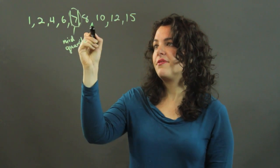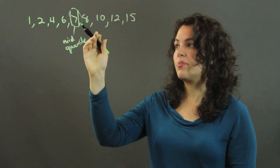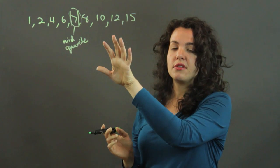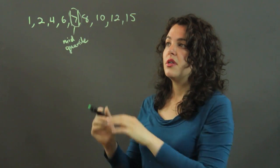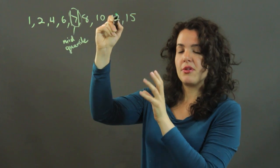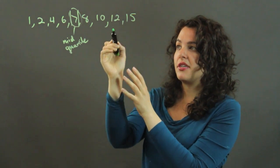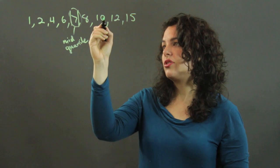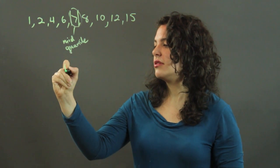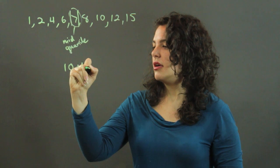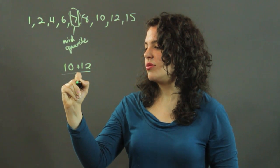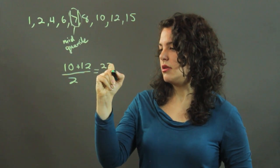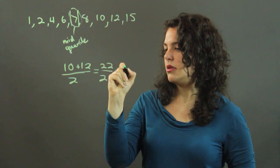And then we have to find the median of these upper four numbers. Now, because we have an even amount of numbers here, meaning there's no number that's going to fall right in the middle, we have to take the two middle numbers and average them or find the mean of them. So we look at 10 and 12. And the mean of 10 and 12 is 11.